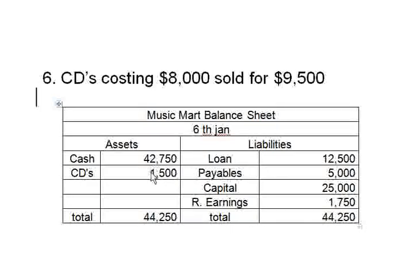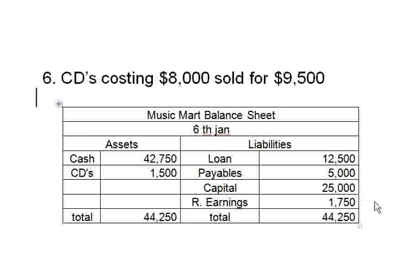The cash account increases by 9,500 and the CDs account decreases by 8,000. The profit of 1,500 is added to retained earnings. There was already 250 dollars in retained earnings, so net retained earnings is now 1,750.